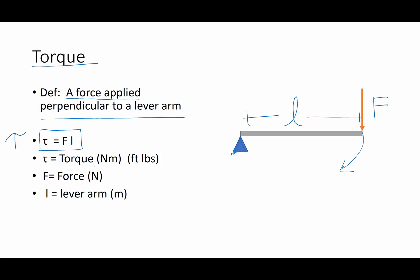Torques are measured in either the metric units of newton meters or the English units of foot pounds. Those of you who have ever worked with a torque wrench, torque wrenches are typically the English ones or foot pounds, and the metric are newton meters. Force in newtons, lever arm of course in meters.